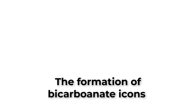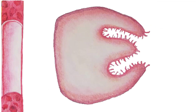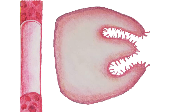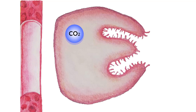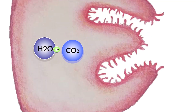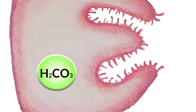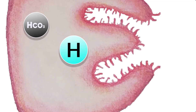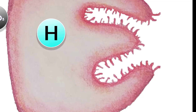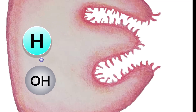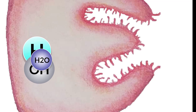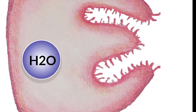Step two: the formation of bicarbonate ions. These ions are a product of a reaction involving carbon dioxide and water inside the cell. Carbon dioxide diffuses from the blood vessel into the cell and combines with water in a reaction catalyzed by carbonic anhydrase enzyme to form carbonic acid (H₂CO₃). The carbonic acid then quickly dissociates into hydrogen ions and bicarbonate ions. The bicarbonate exits the cell, and the hydrogen ions neutralize the hydroxyl ions from the previous reaction.